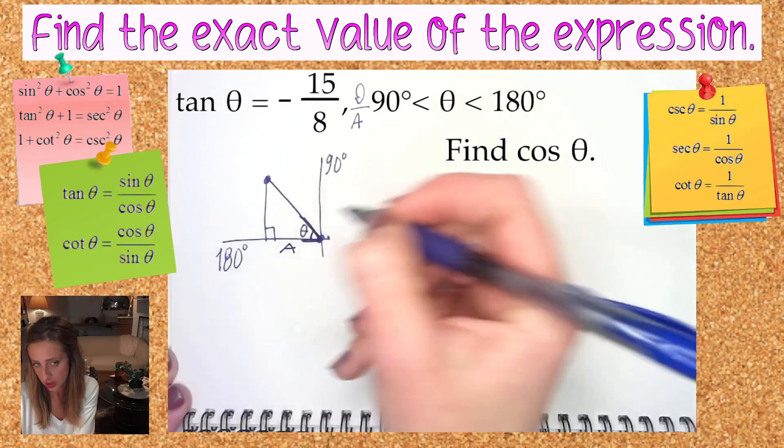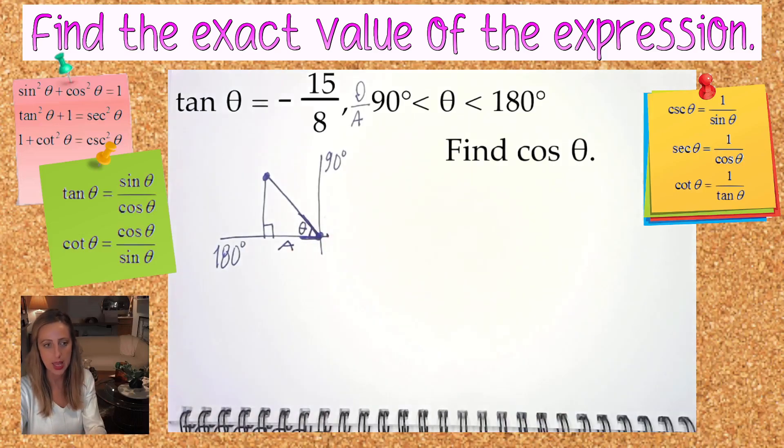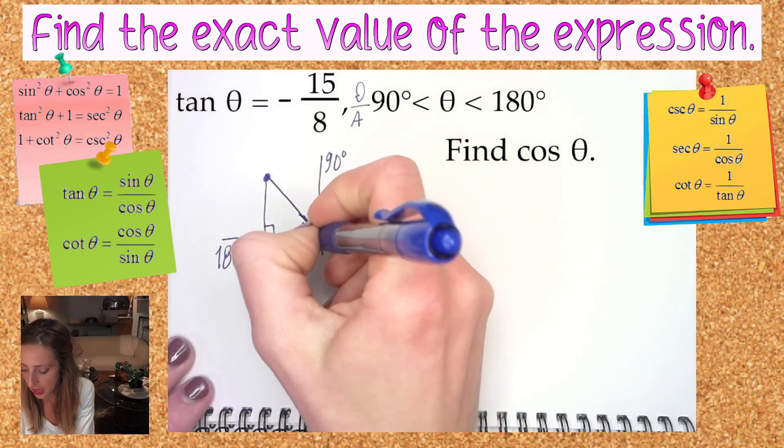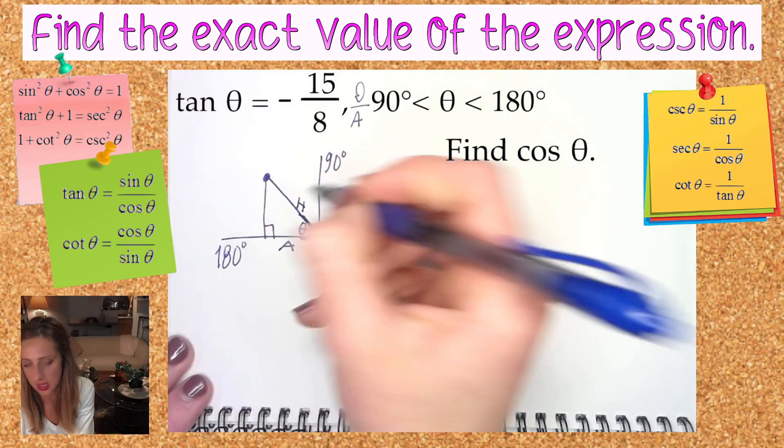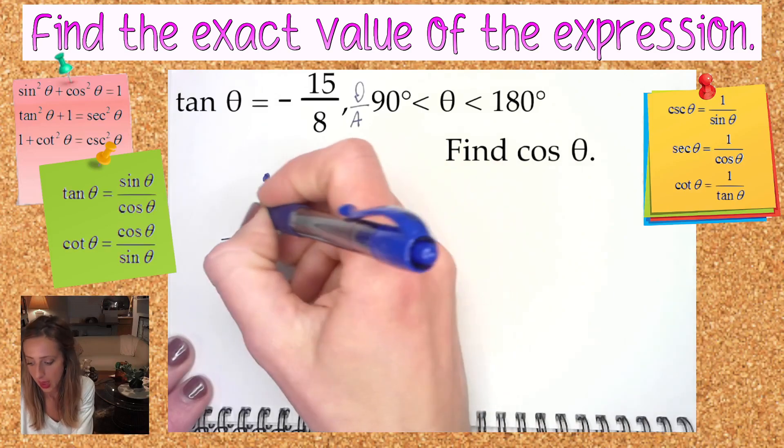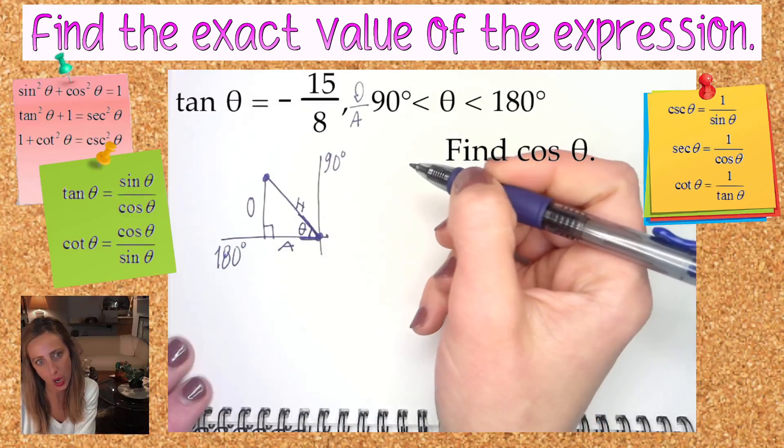There's an A here for angle, or maybe it's an A for adjacent. You could also take the A and be like, boop, open it up and make it into an H. So the other side we're touching right over here is the hypotenuse. That only leaves this side over here for opposite.